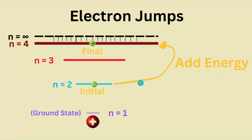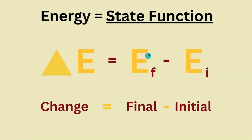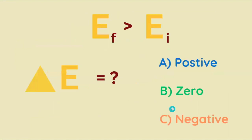So we can graduate it from a lower energy to a higher energy shell. We describe energy as a state function, meaning that we calculate the change in energy as the difference between final energy minus initial energy. What can we say about the change in energy if the final energy is greater than the initial energy? Will it be positive, negative, or zero?